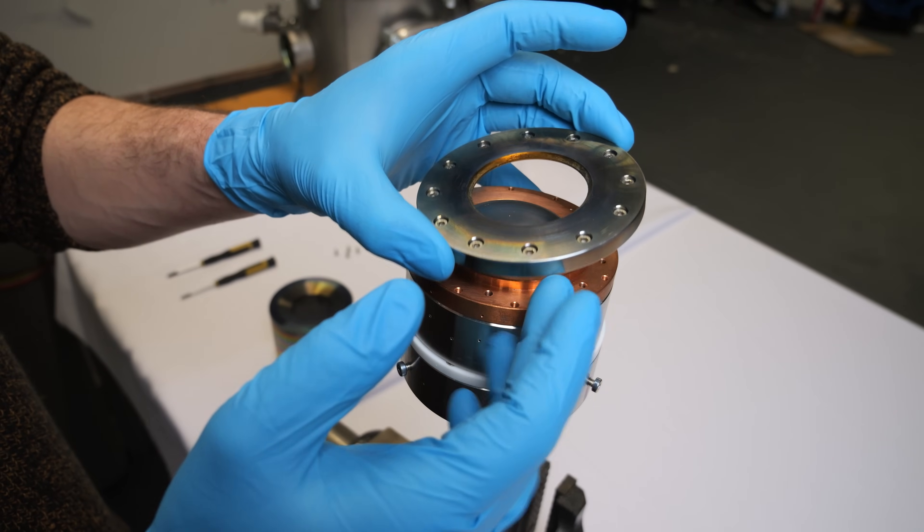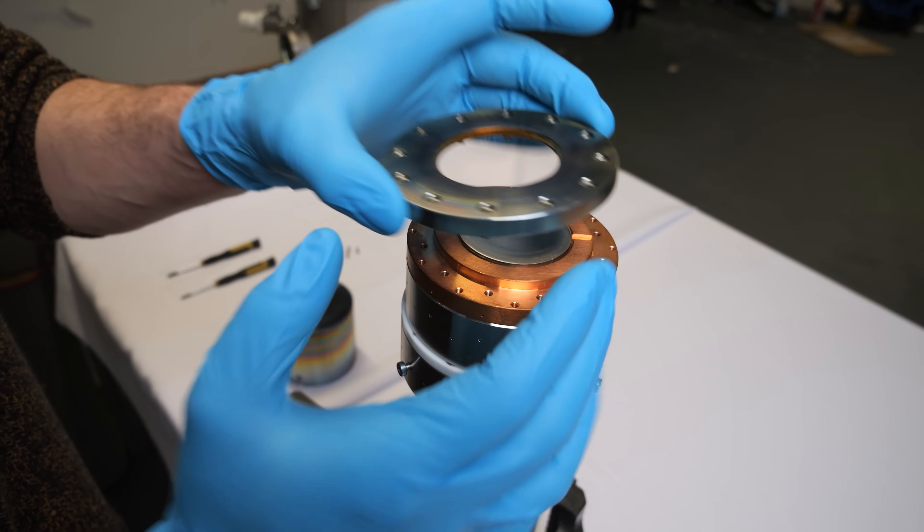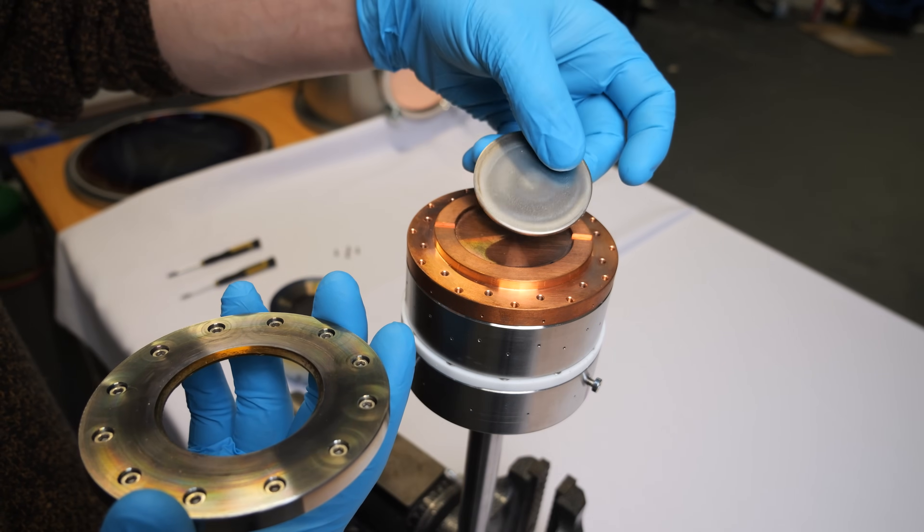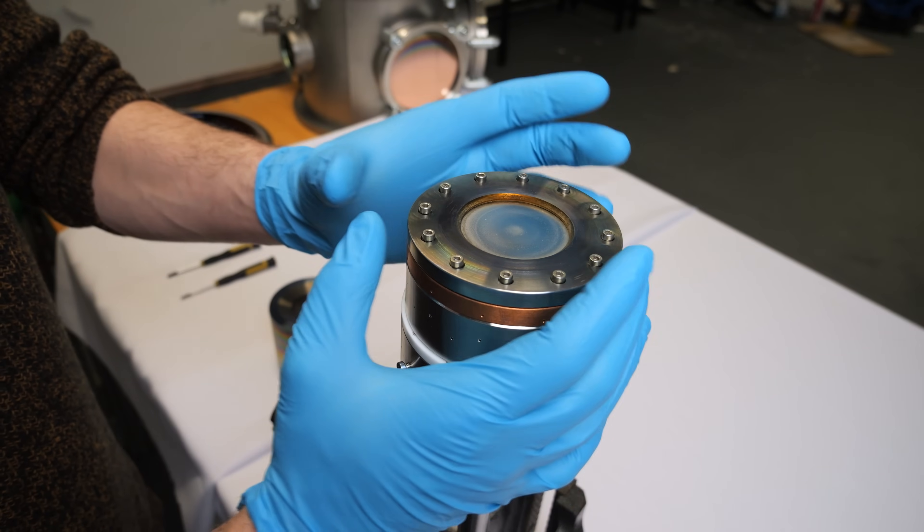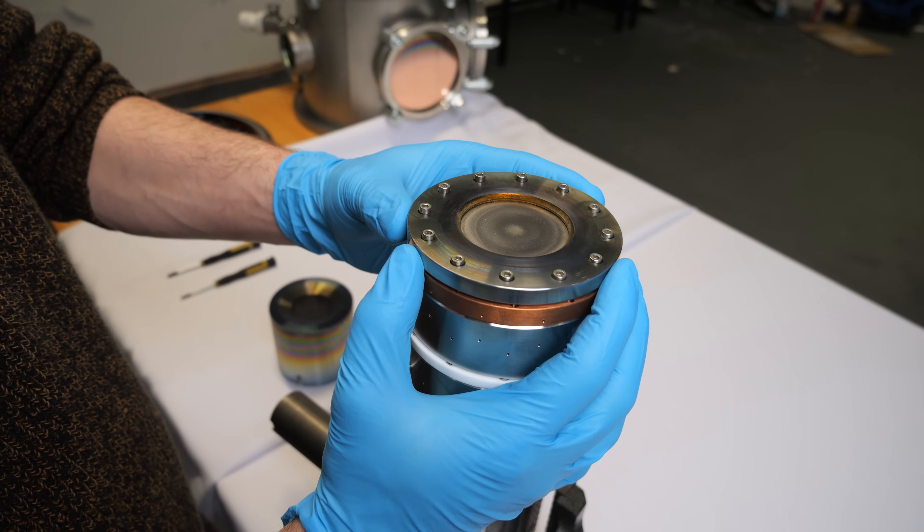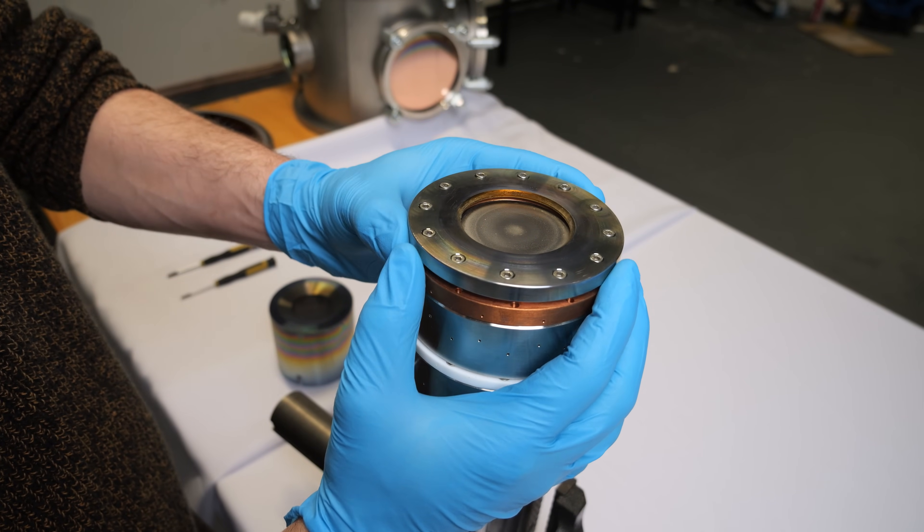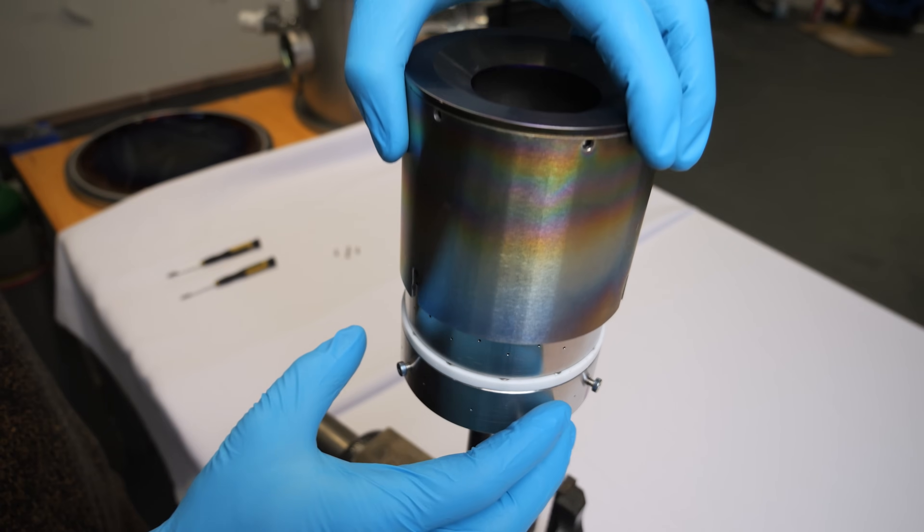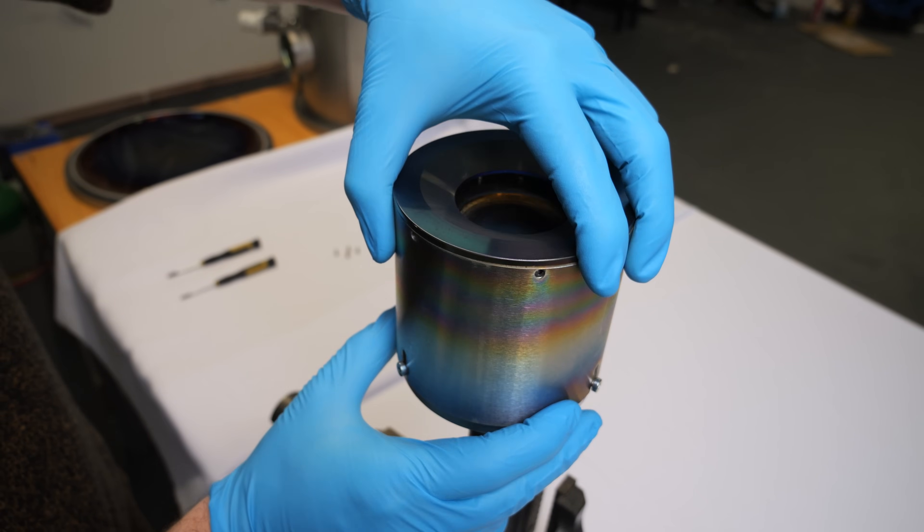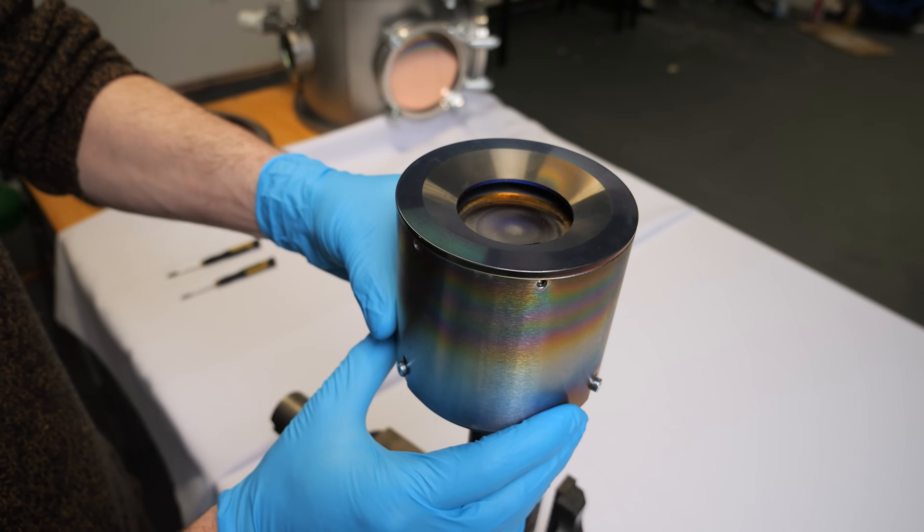This part right here is what I would call the target clamp. It is just there to hold down your material, your sputtering target, in this case a piece of titanium to the copper part of the magnetron. It can easily be used for thicker targets and it would just sit a little bit proud of the copper surface. The slots in the ground shield are meant to accommodate those thicker targets by also raising it.